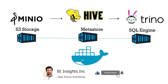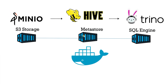A data lake is a popular way to store and analyze data that comes from various sources. We can store the data as is — there is no need to convert it to a predefined schema. To discover the structure and form of our data, we use a catalog service. This reduces the time and effort it takes to derive insights from the data stored in the data lake.